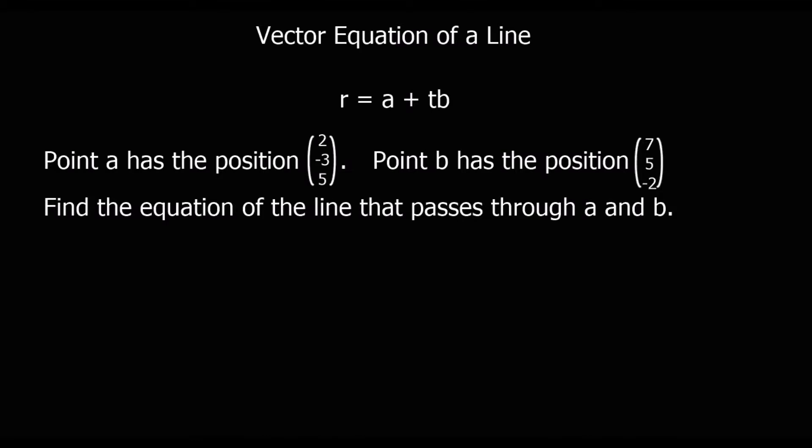In this video we're going to look at the vector equation of a line. The vector equation of a line is in the form r equals a plus tb, so r means the position vector.